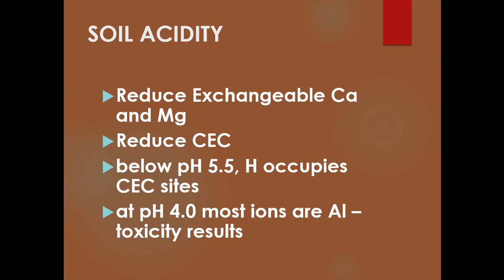Soil acidity reduces exchangeable calcium and magnesium and reduces cation exchange capacity. Below a pH of 5.5, hydrogen occupies the CEC sites, so the soil can't hold many of the base cations that plants use as essential elements. And at a pH of 4.0 and below, aluminum can become toxic.